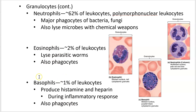Basophils' major job is to produce histamine and heparin during an inflammatory response. When you're cut, scraped, or react to a pathogen, histamine causes the infected tissue to swell — swelling means fluid and white blood cells are moving there. Heparin prevents clotting, keeping blood and lymph flowing to the site of injury to fight infection.